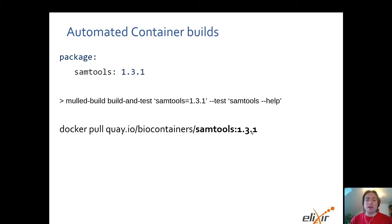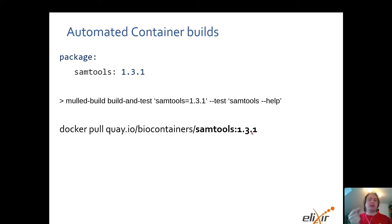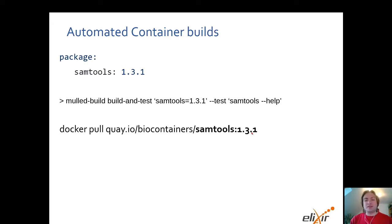The container just contains two layers: one is a BusyBox and the other layer is the samtools binary. We use a technique called layer cloning, which is simply copying the layer from a build container to a runtime container. You can think of it like build stages in a Dockerfile, but without a Dockerfile — and this technique was developed years before build stages were introduced.